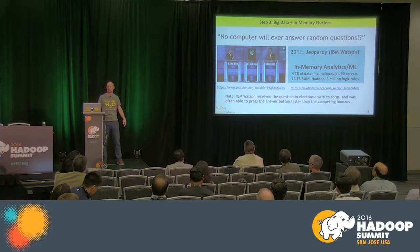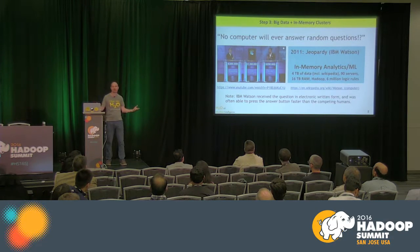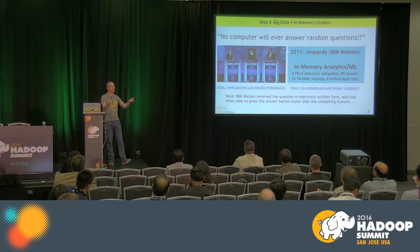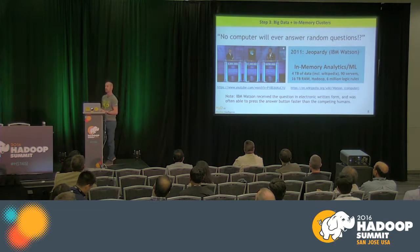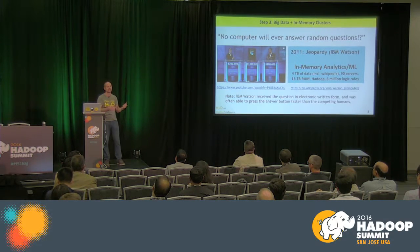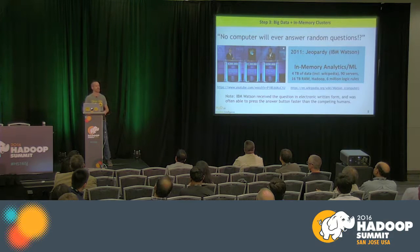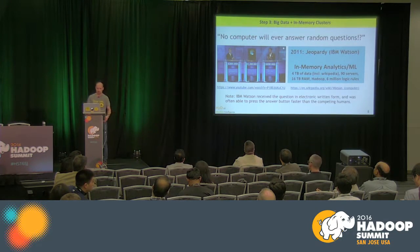Then there was the Jeopardy challenge — you ask anything and the machine has to answer it. They took a Hadoop cluster with 90 servers, put in all the lexicographic information, the encyclopedia, Wikipedia, all that stuff, and dumped it onto those disks, then sucked it into an in-memory system. They had six million logic rules encoded. When you ask a question like 'who won this in 1974?', all it has to do is find the best match, and once certain enough, it presses the button in a millisecond — faster than any human.